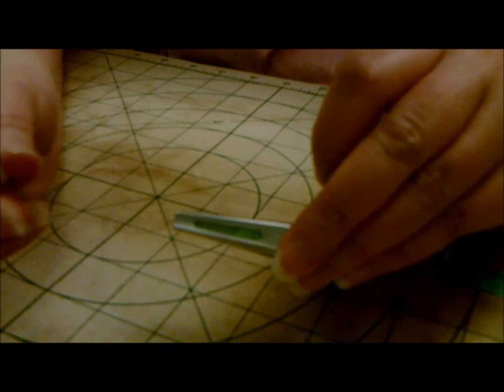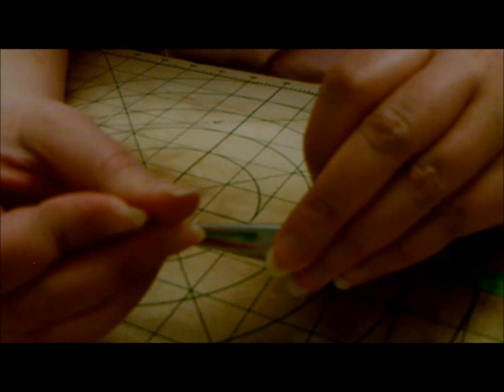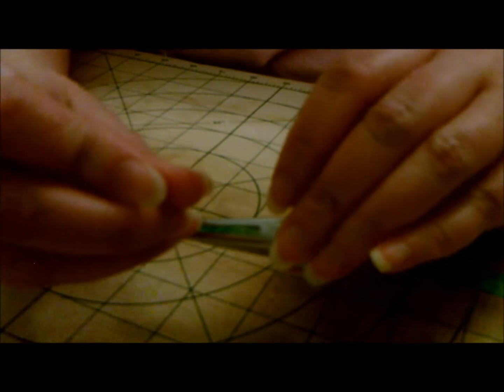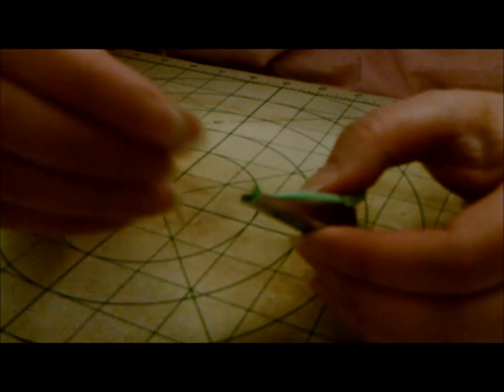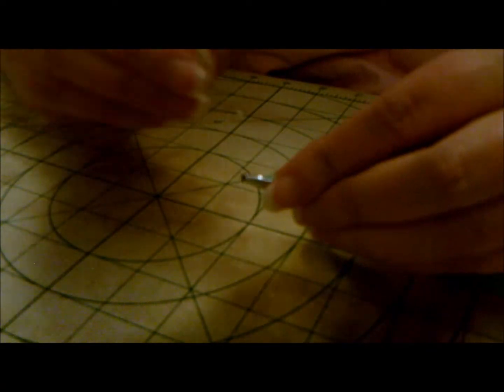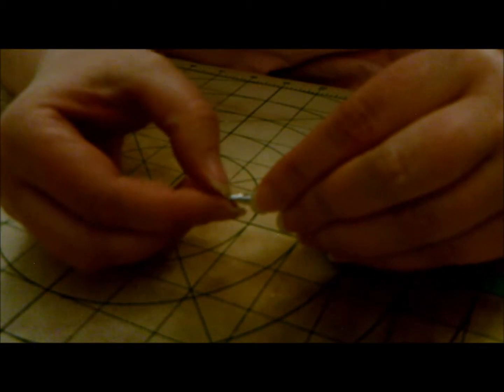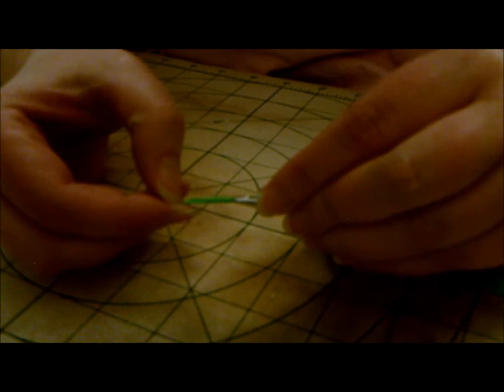You can get these at quilt stores and other fabric places, or you can order them online. Now I get in like this. It may be hard to see, but here's the fabric and it's hard to catch. So I just take a pin and kind of pull it through. Sometimes it doesn't come through the way you want, so I pull it back and I do it again.